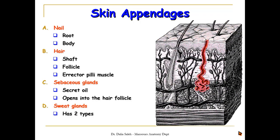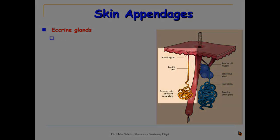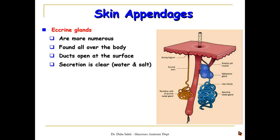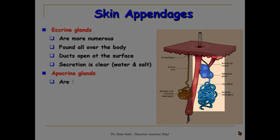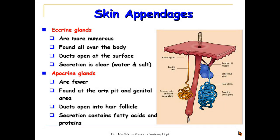We also have sweat glands, and they are of two types. Eccrine glands — they are more numerous, found all over the body; their ducts open directly at the surface of the epidermis; their secretion is clear, made of water and salt. We also have apocrine glands — they are fewer or less numerous, found at the armpits and the genital area; their ducts open into the hair follicles at these regions; their secretion contains fatty acids and proteins.